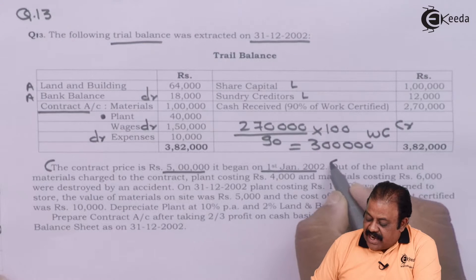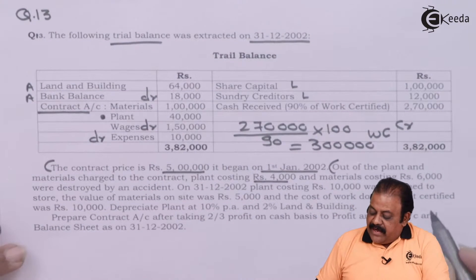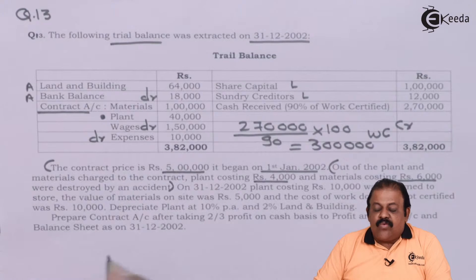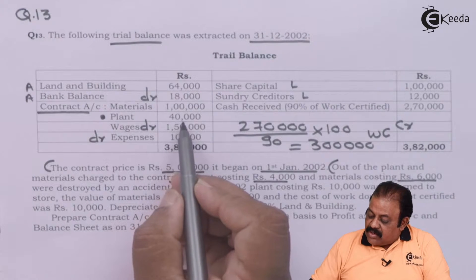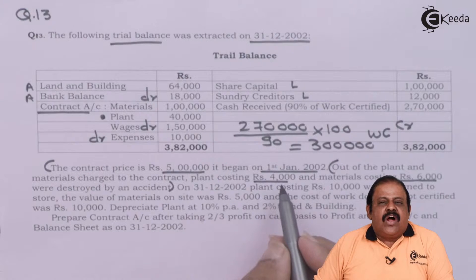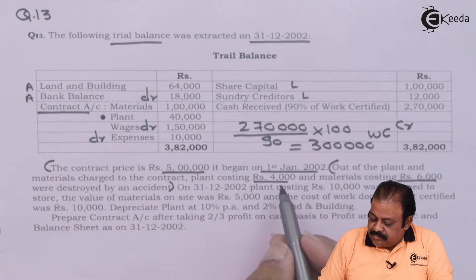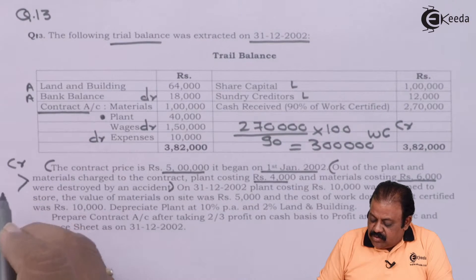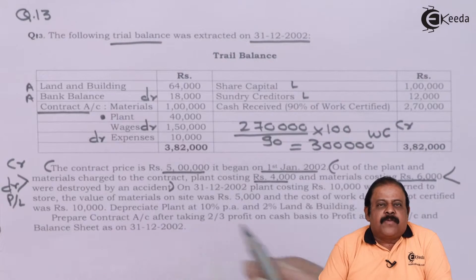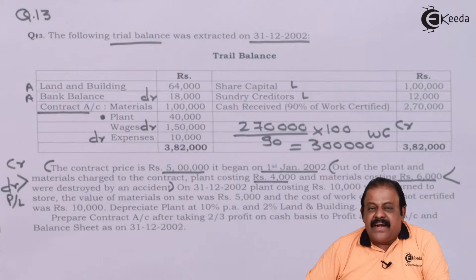Out of plant and material charged to the contract, plant costing 4,000 and material costing 6,000 were destroyed by an accident. Plant received by contract was 40,000, and 4,000 of that was destroyed — this is an abnormal expense and will not be charged to contract account. Instead it is transferred to profit and loss account: contract account is credited, and profit and loss account is debited. Similarly, material costing 6,000 lost by accident is an abnormal expense — debited to P&L and credited to contract account.